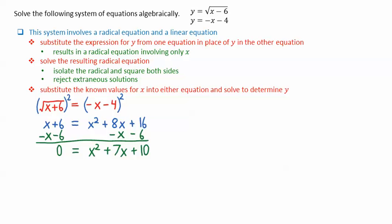This quadratic expression factors. Note we're looking for numbers that multiply to give 10 and add to give 7. Those numbers are 5 and 2, giving us the factors x plus 5 and x plus 2. We then have the solutions for x of negative 5 and negative 2.